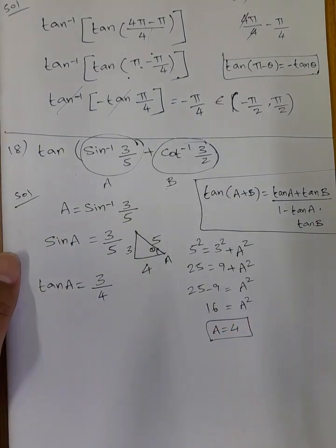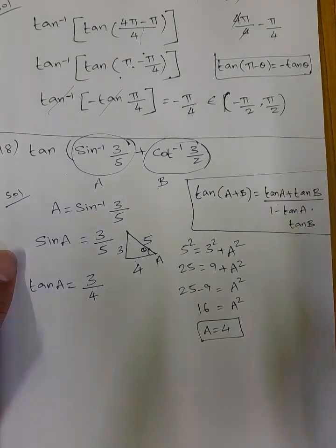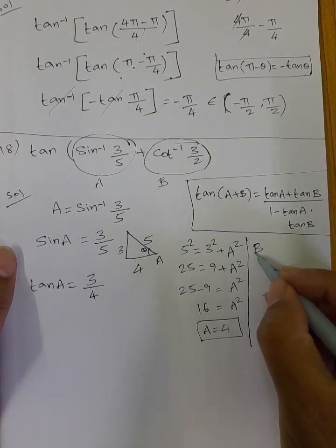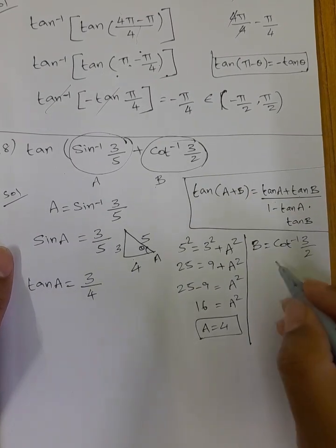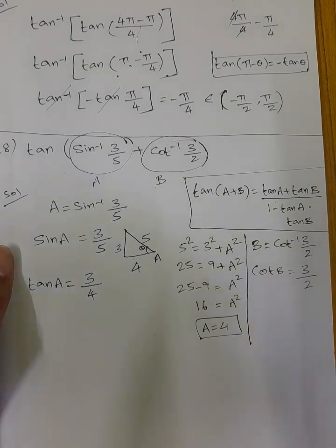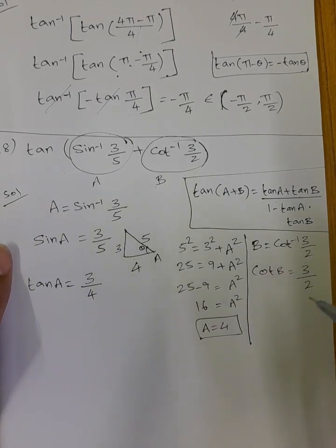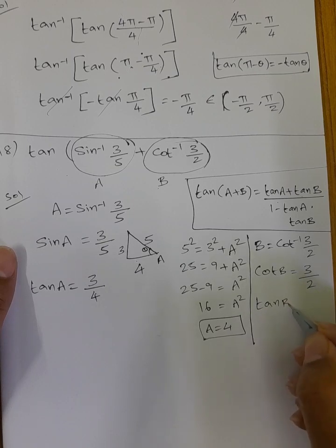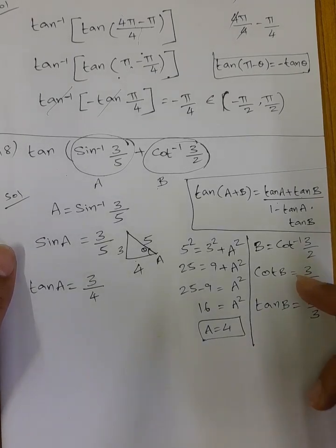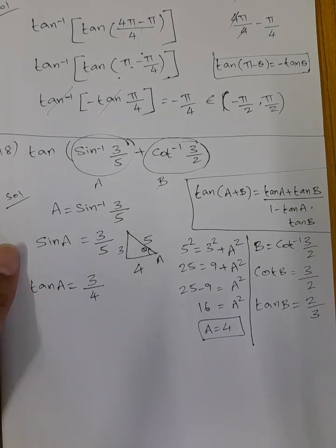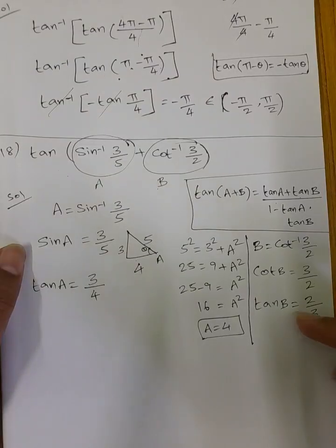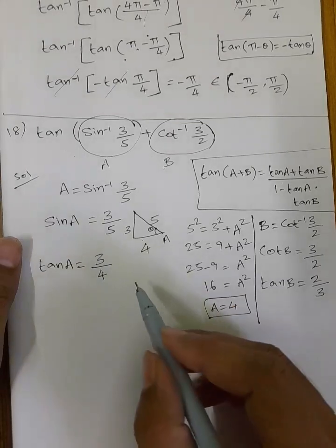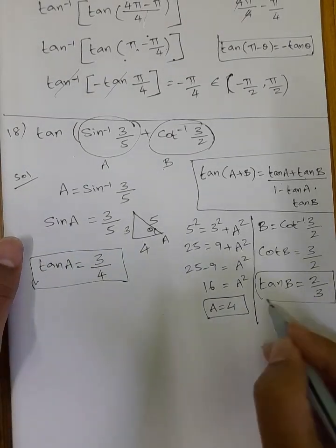Now for tan B: B = cot inverse of (3/2), so cot B = 3/2. Since tan is the reciprocal of cot, tan B = 2/3. So tan A = 3/4 and tan B = 2/3. We will now substitute these values into the formula.